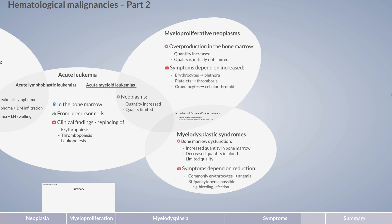Myelodysplastic syndromes occur in individuals of older age and have a slow course, often over several years. The key to differentiating between the three groups is ultimately based on the hematological presentation — that is, which cells are altered in the bone marrow and blood.